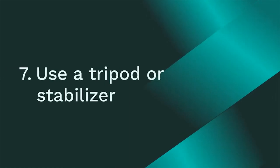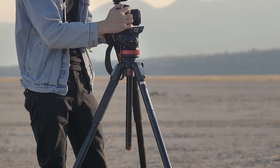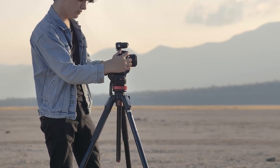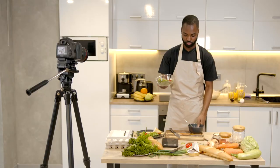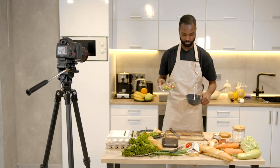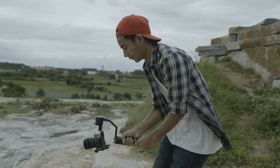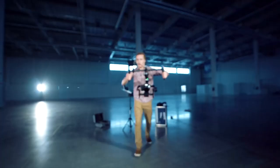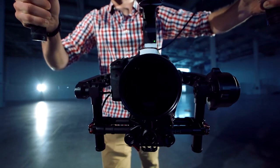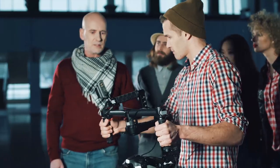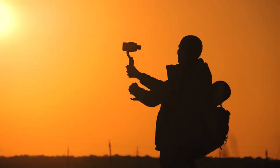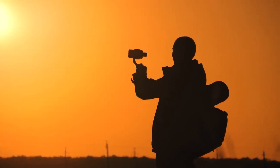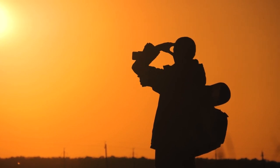Number 7: Use a tripod or stabilizer. A tripod is a three-legged stand that holds your camera in place, providing stability and ensuring that your shots are leveled — perfect for stationary shots or capturing a particular scene without any movement. A stabilizer, on the other hand, helps you keep your camera steady while you're moving and is great for capturing action shots or following a subject. Using a tripod or stabilizer not only improves the quality of your footage but also makes it look more professional.